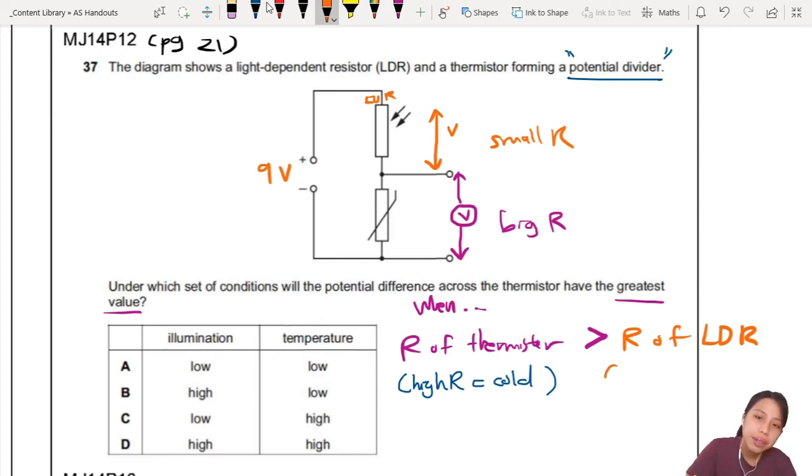Then you have to think of light. So small R occurs when it's very bright. Or your illumination or light intensity is very high.